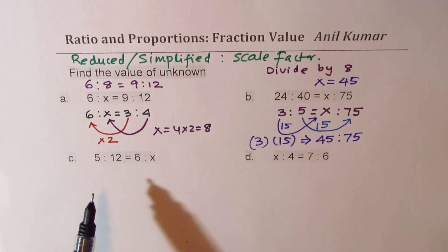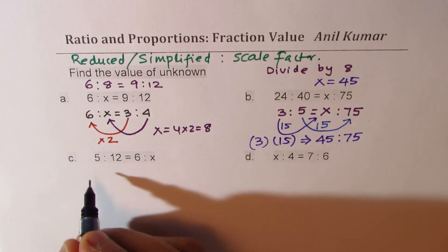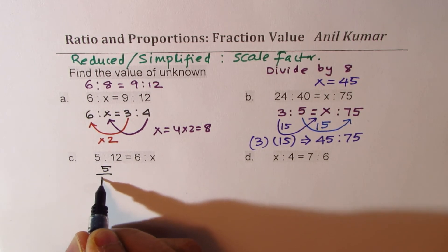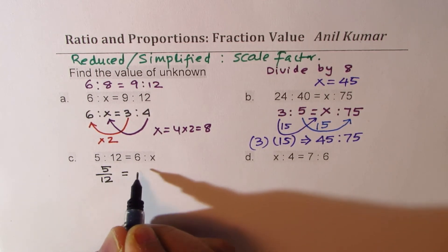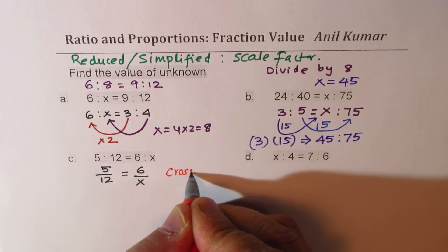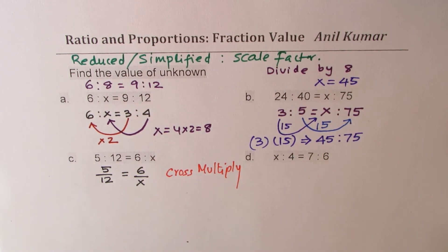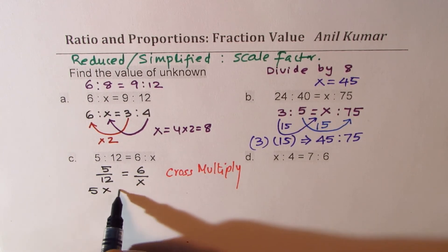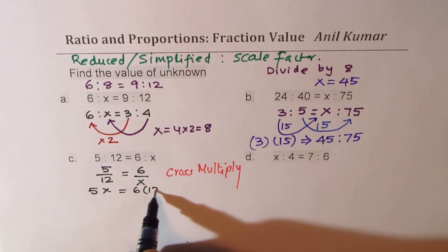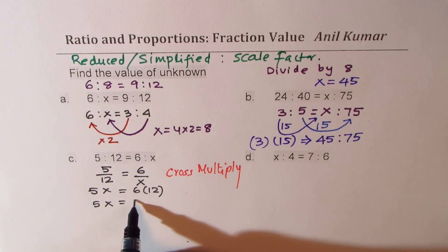Now in this case I will prefer to write them as fractions. When I say 5 to 12, I could write this as 5 over 12 equals to 6 over x. And now we will actually cross multiply. So this technique of cross multiplication really helps. So if you cross multiply you get 5x here equals to 6 times 12 which is 72. So we can write this as 5x equal to 72.